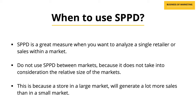As you can see in the example, using percentage ACV distribution makes the comparison between different products in a single market much more realistic compared to using simple or numeric distribution. SPPD is a great measure when you want to analyze a single retailer or sales within a market. However, it is rarely appropriate when making comparisons between different markets, because SPPD does not take into consideration the relative size of the markets. A store in a large market will generate a lot more sales than a store in a small market, so using SPPD across markets is not a good solution.